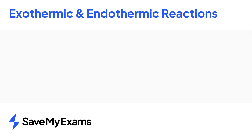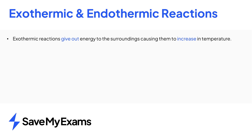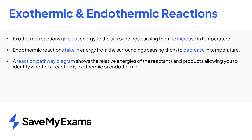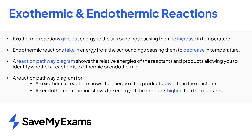To summarize: an exothermic reaction gives out energy to the surroundings, causing the temperature of the surroundings to increase. Endothermic reactions take in energy from the surroundings, causing the temperature of the surroundings to decrease. Reaction pathway diagrams show the relative energies of the reactants and products and allow you to identify whether a reaction is exothermic or endothermic. The diagram for an exothermic reaction shows the energy of the products lower than the reactants, and for an endothermic reaction shows the energy of the products higher than the reactants.